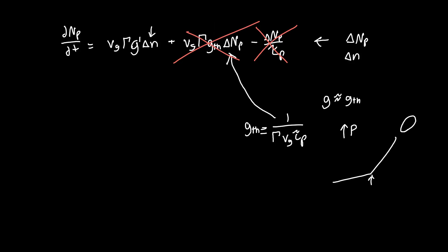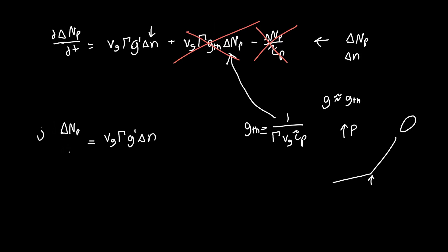The simplified equation is d(delta_NP)/dt = V_g·Gamma·G-prime·delta_N — just a single term on each side. For the frequency response, we replace this derivative with j·omega (or s for the Laplace transform). We can then solve for delta_N, our carrier density, since ultimately we want everything in terms of the number of photons inside the cavity to get the output power. Dividing both sides, delta_N equals j·omega·delta_NP divided by V_g·Gamma·G-prime.